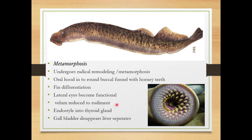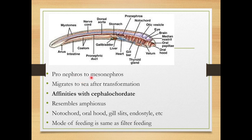The velum is reduced to a rudiment. In the larvae there is separation into buccal cavity and pharynx, but this is reduced. The endostyle, which is related to feeding in the larva, converts to a thyroid gland with hormonal functions in the adult. The gallbladder disappears and liver separates. The pronephric kidney becomes a mesonephric kidney, and gradually as transformation happens, the larva becomes the adult and migrates back to the sea.